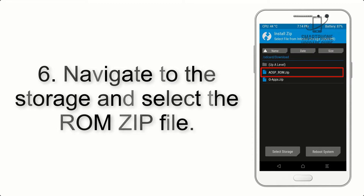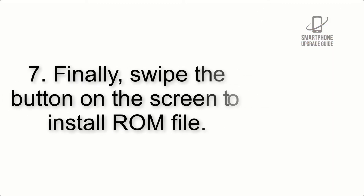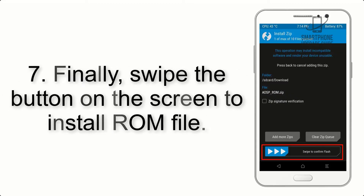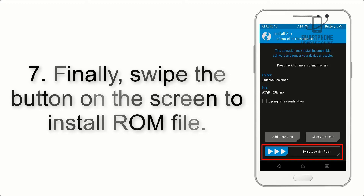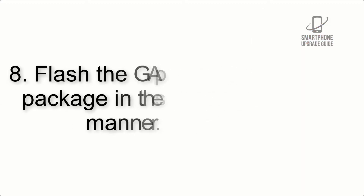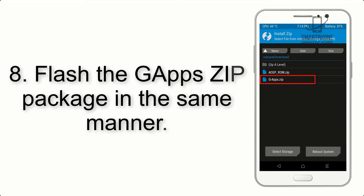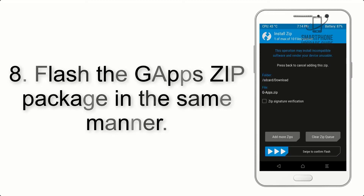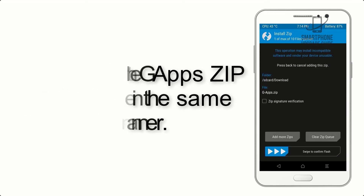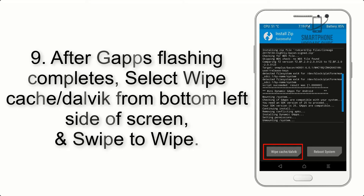Step 5: Go back to the recovery main screen and tap on the Install button. Step 6: Navigate to the storage and select the ROM zip file. Step 7: Finally, swipe the button on the screen to install the ROM file.